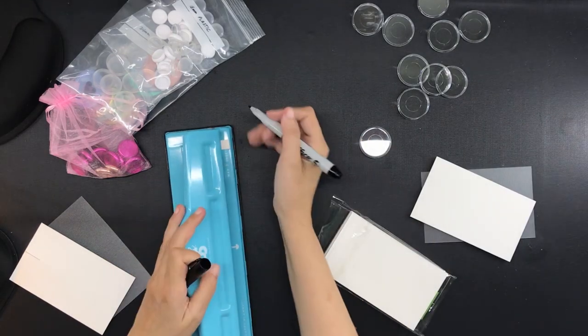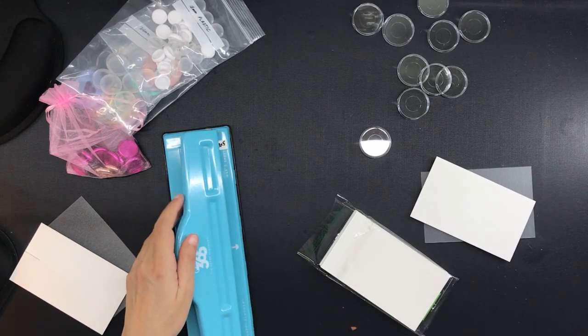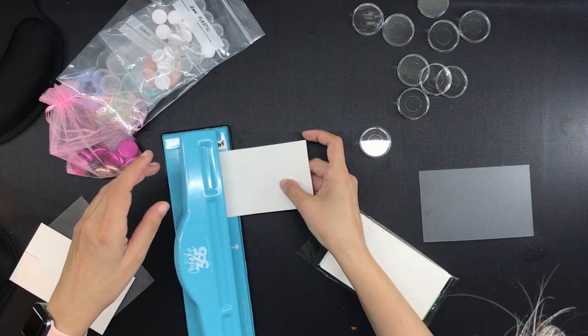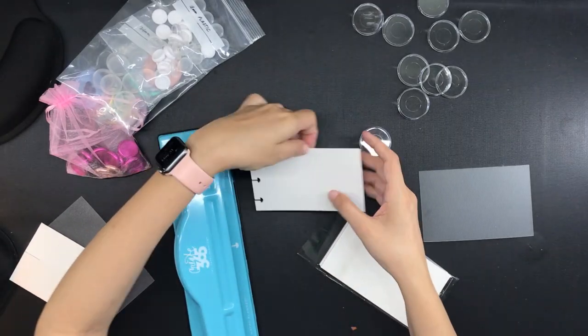And I used a marker to write down three by five on it to remind myself that that is the stopper to hole punch three by five index cards. And then from here on out it's just a matter of hole punching all of the index cards in the pack.